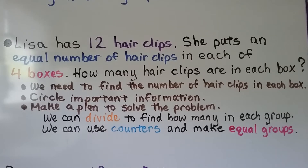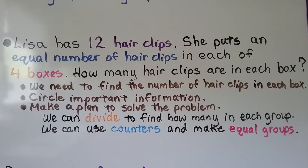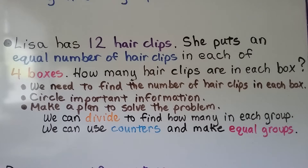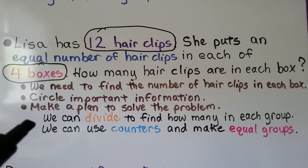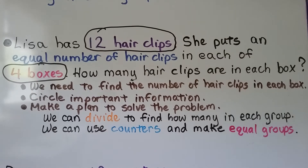Lisa has 12 hair clips. She puts an equal number of hair clips in each of 4 boxes. How many hair clips are in each box? We need to find the number of hair clips in each box. The important information: she has 12 hair clips, there are 4 boxes, and she puts an equal number in each. We can divide to find how many in each group and use counters to make equal groups.